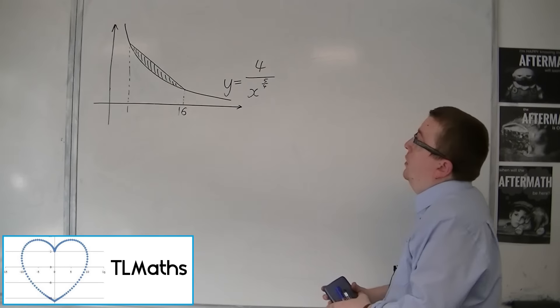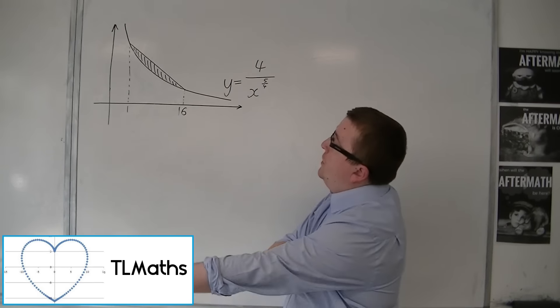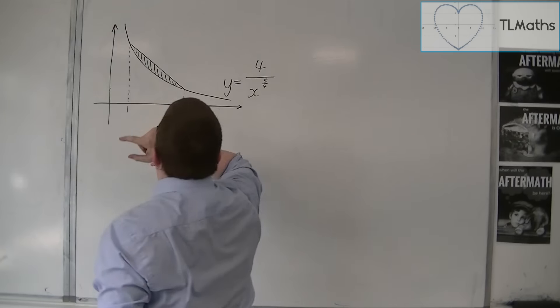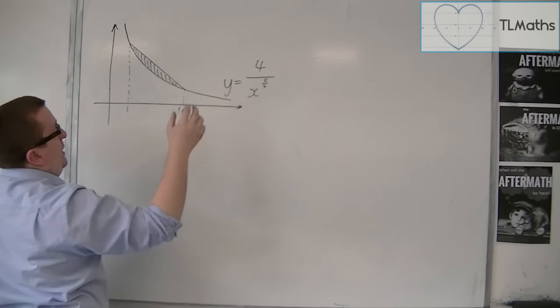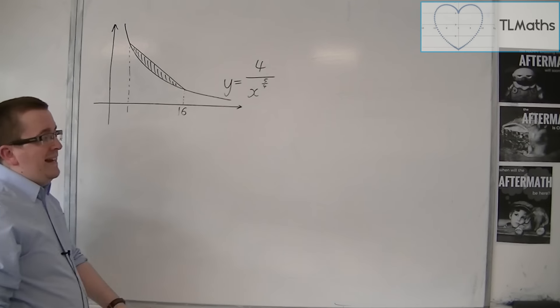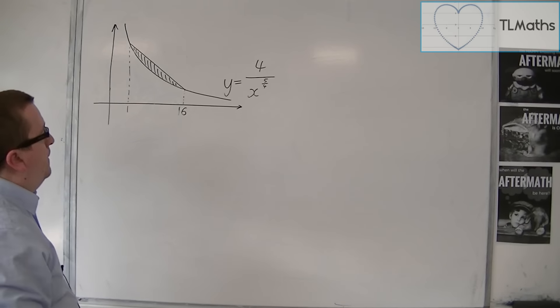OK, in this example, we want to find this shaded region, which is bounded between a straight line, so a straight chord, and the curve y is equal to 4 over x to the 5 quarters.